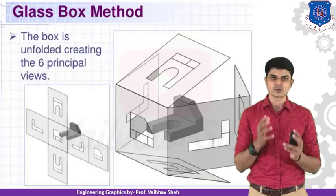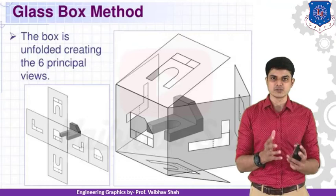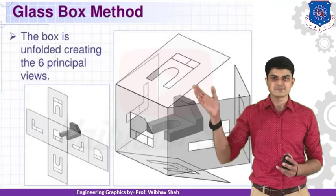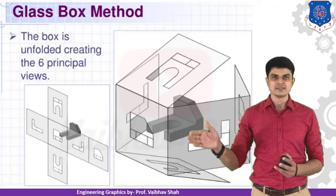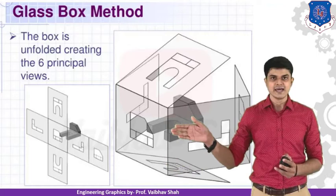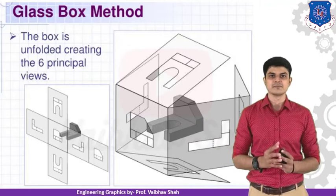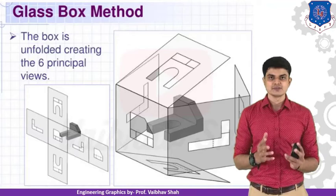If the examination asks for all six views, we place the object in the glass box and open it up to get six views: front view, top view, bottom view, left-hand side view, right-hand side view, and rear view. When we unfold this box, we get the pattern which is known as the layout for the projection system. This is the concept of the glass box.